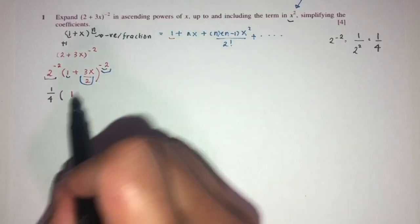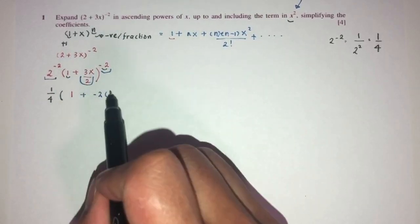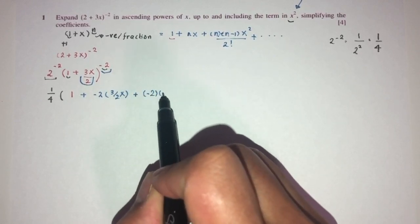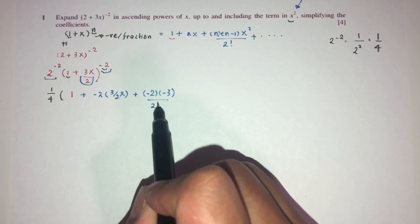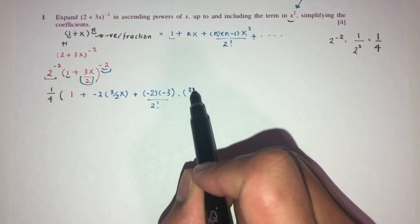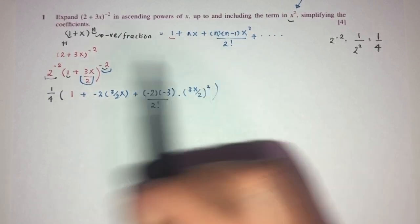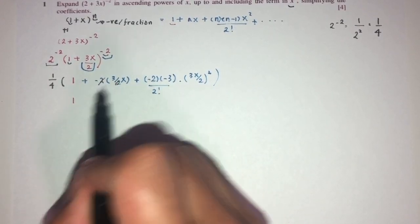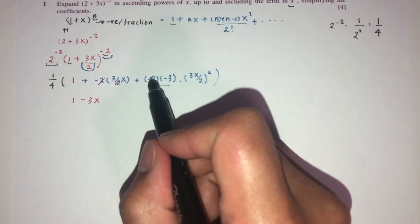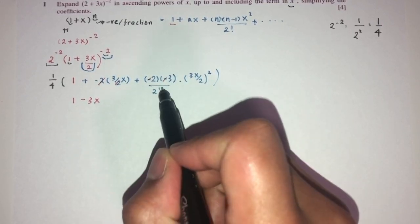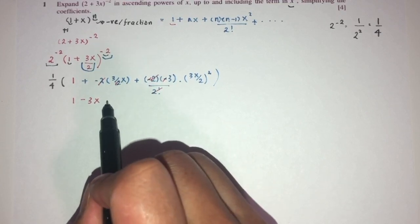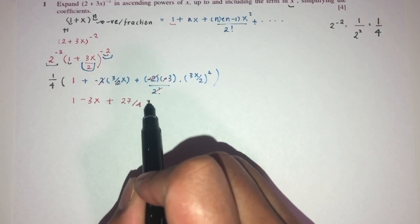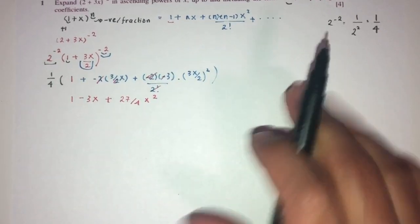By comparison: n is −2, x here will be 3x/2. So we get 1 + (−2)(3x/2) + [(−2)(−3)/2!]·(3x/2)². Simplifying: the first term is 1, the second becomes −3x, and for the third term: (−2)(−3) = 6, times 9/4 gives 27/4, so we get +27x²/4.